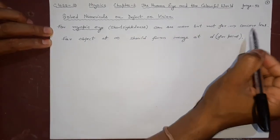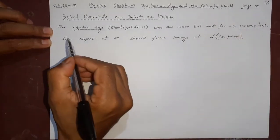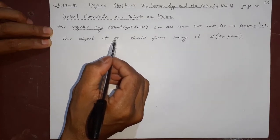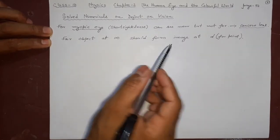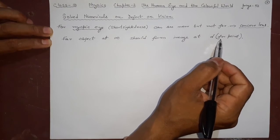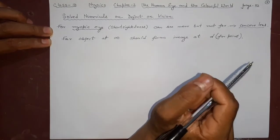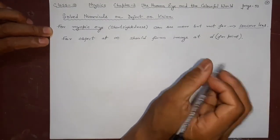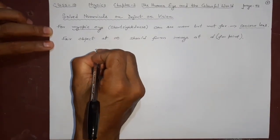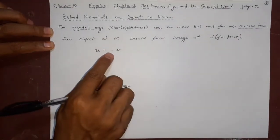The correcting lens is a concave lens. For objects at infinity, the image should form at d, the far point of the eye. In the corrected situation, after correcting, the object distance is at infinity. Objects at infinity which I cannot see means minus infinity, because the object is always kept in the negative side.